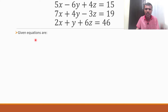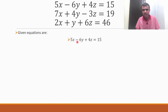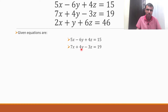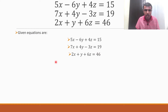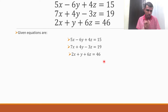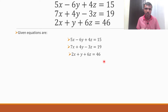When you start with examples, you can start with the same thing. The given equations are: 5x minus 6y plus 4z equals 15; 7x plus 4y minus 3z equals 19; and 2x plus y plus 6z equals 46. Now, since we are in the matrices chapter, let's try to convert this to matrix form.